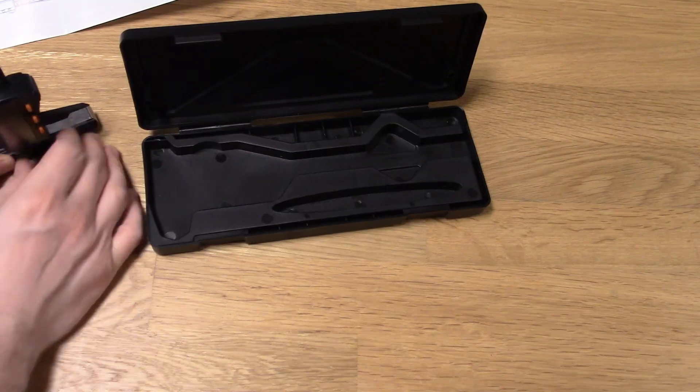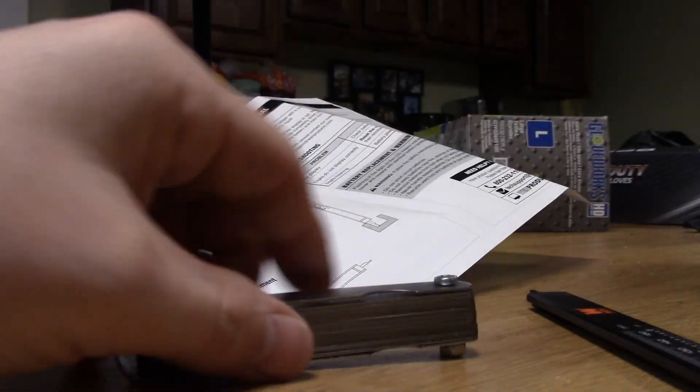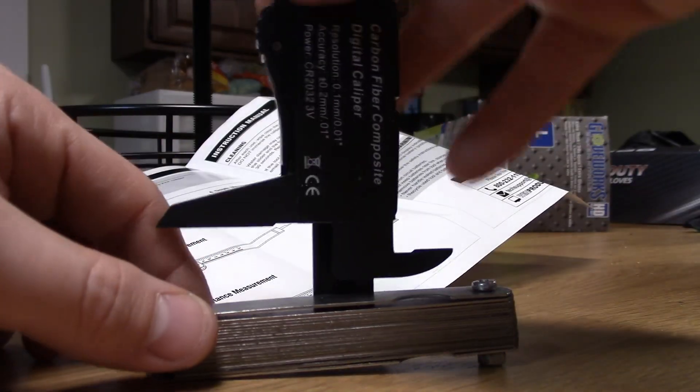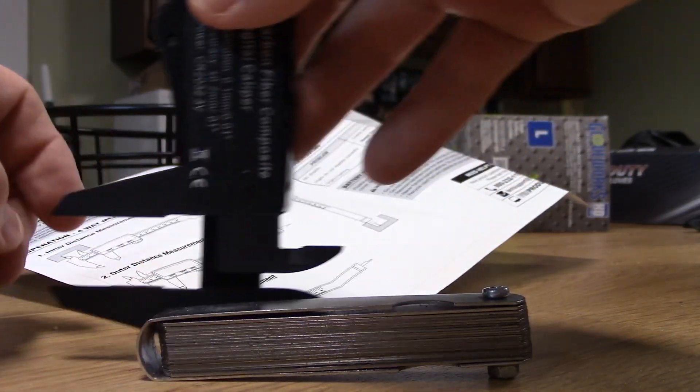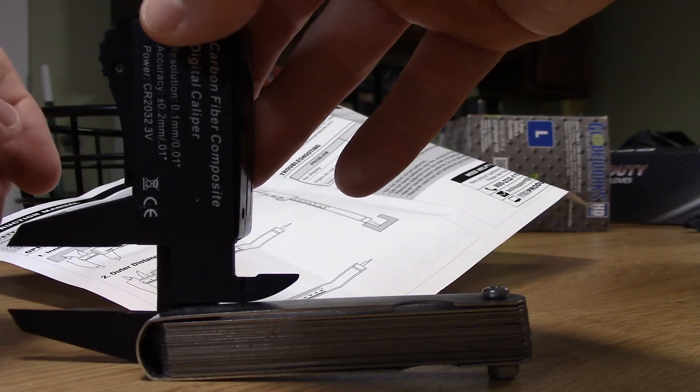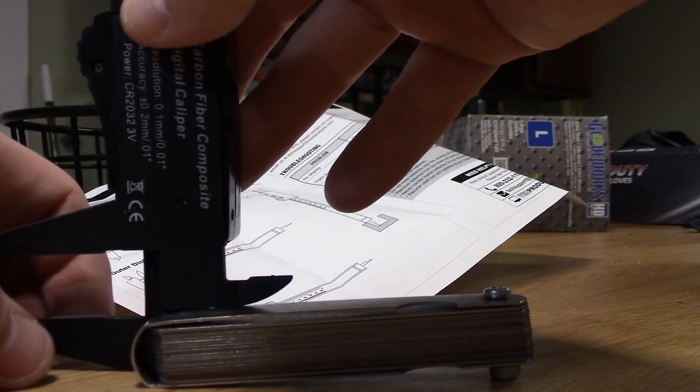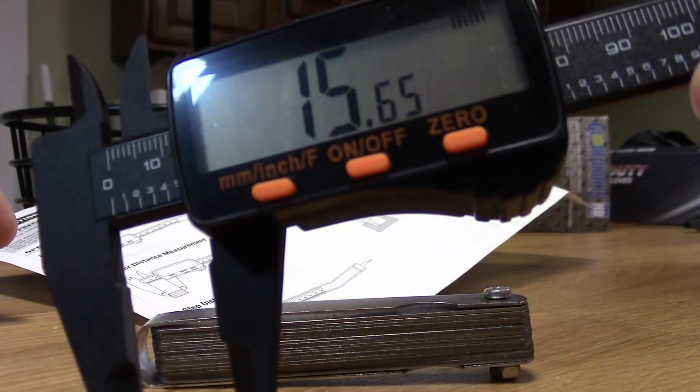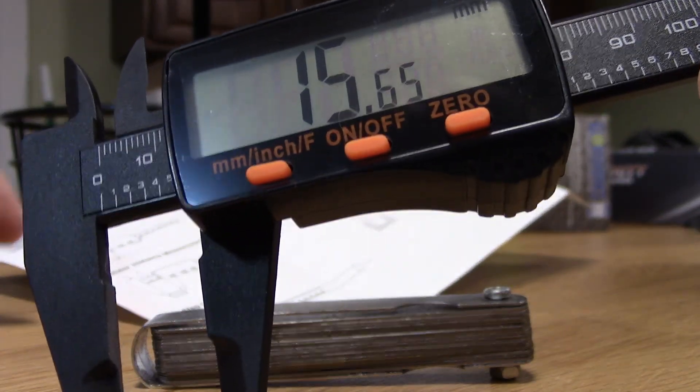I didn't know that this was offset for a reason. So say I had an object and I wanted to see how tall it was. I could set them both on the surface, push down like so, and that would tell me that the object was 15.65 millimeters thick.